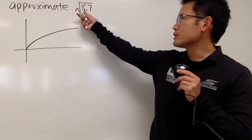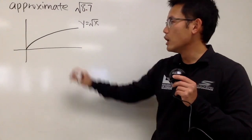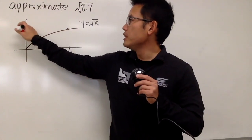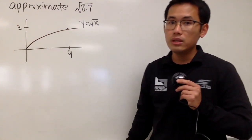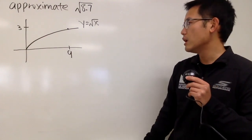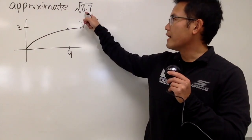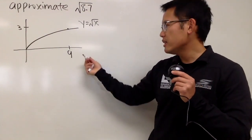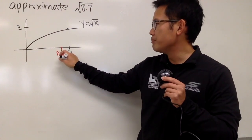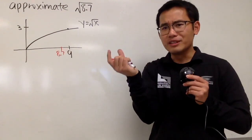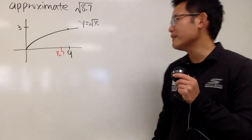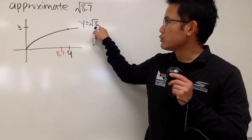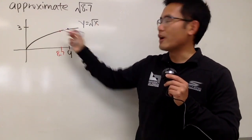Well, we don't really know square root of 8.7 too well. But what we do know is, when x is nicely equal to 9, the y value is just going to be nicely equal to 3. Square root of 9 is 3. And as we can see, when we have 8.7 as x, 8.7 is actually pretty close to 9. Ideally speaking, I should put 8.7 on the curve and calculate the y value.